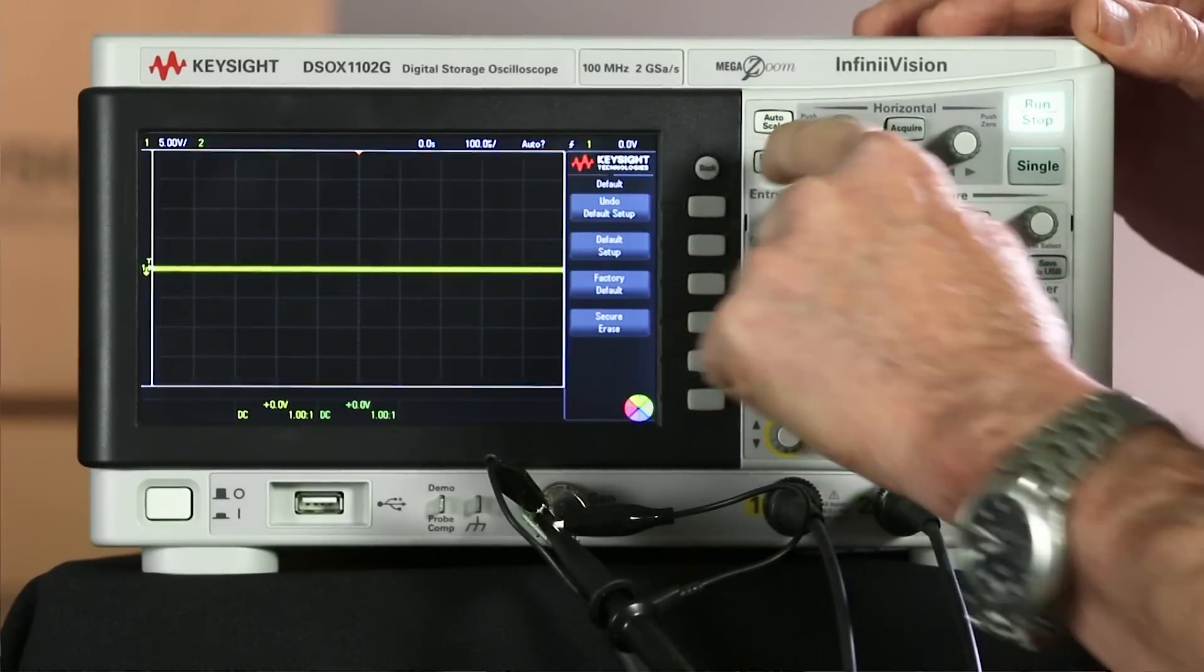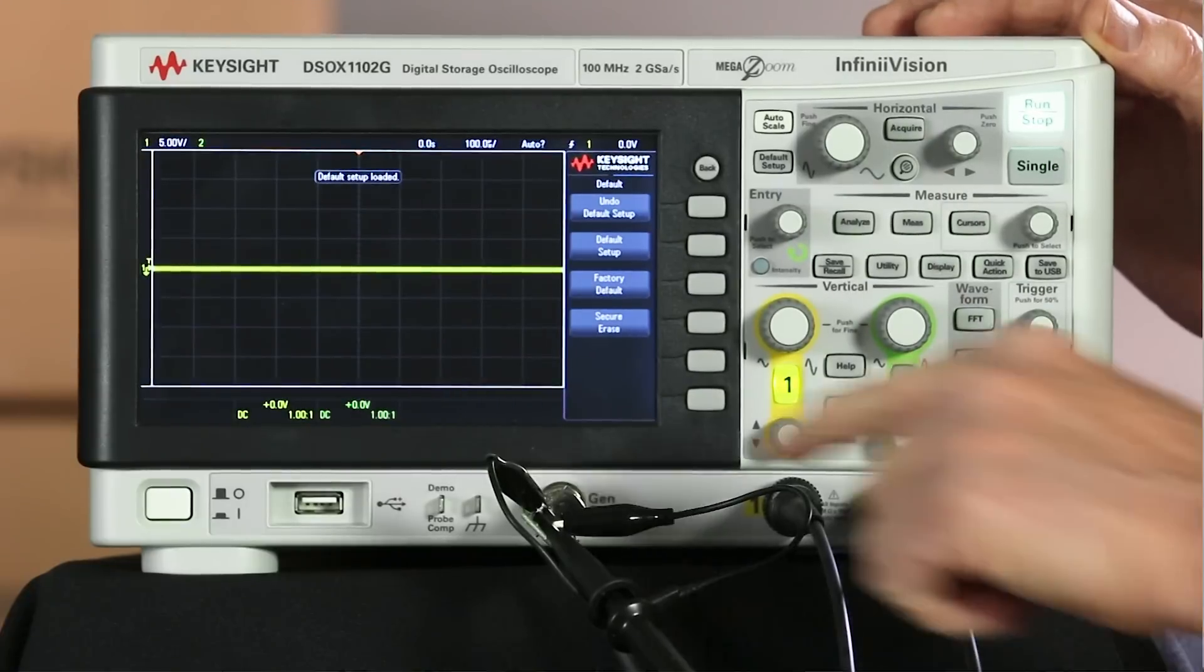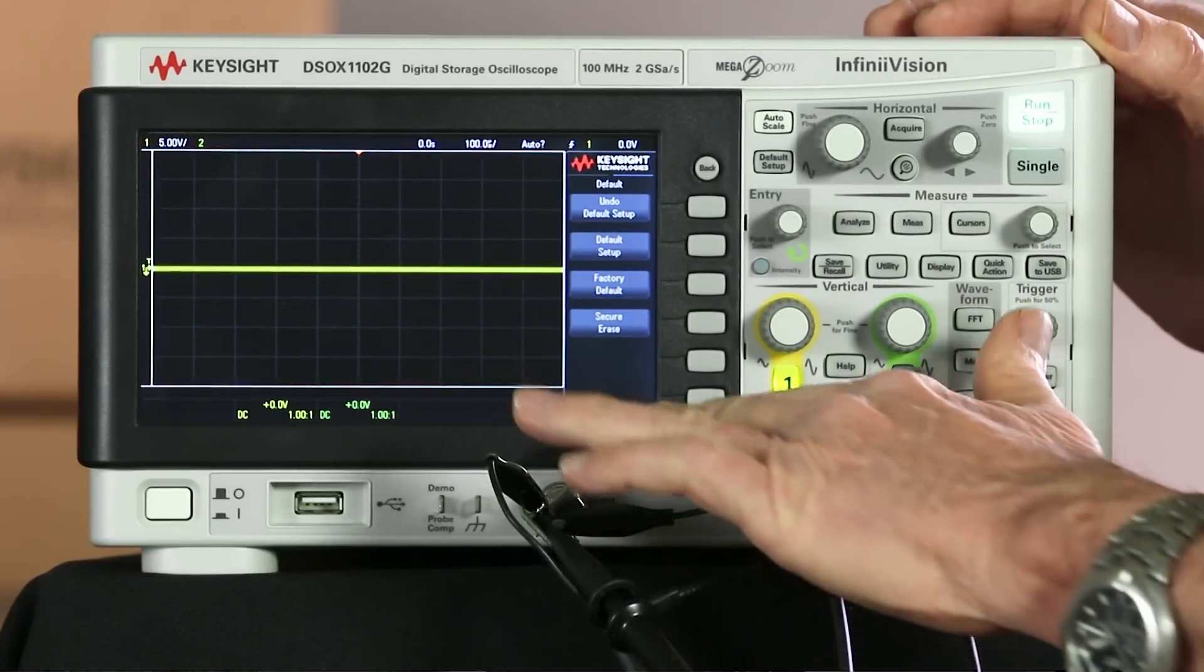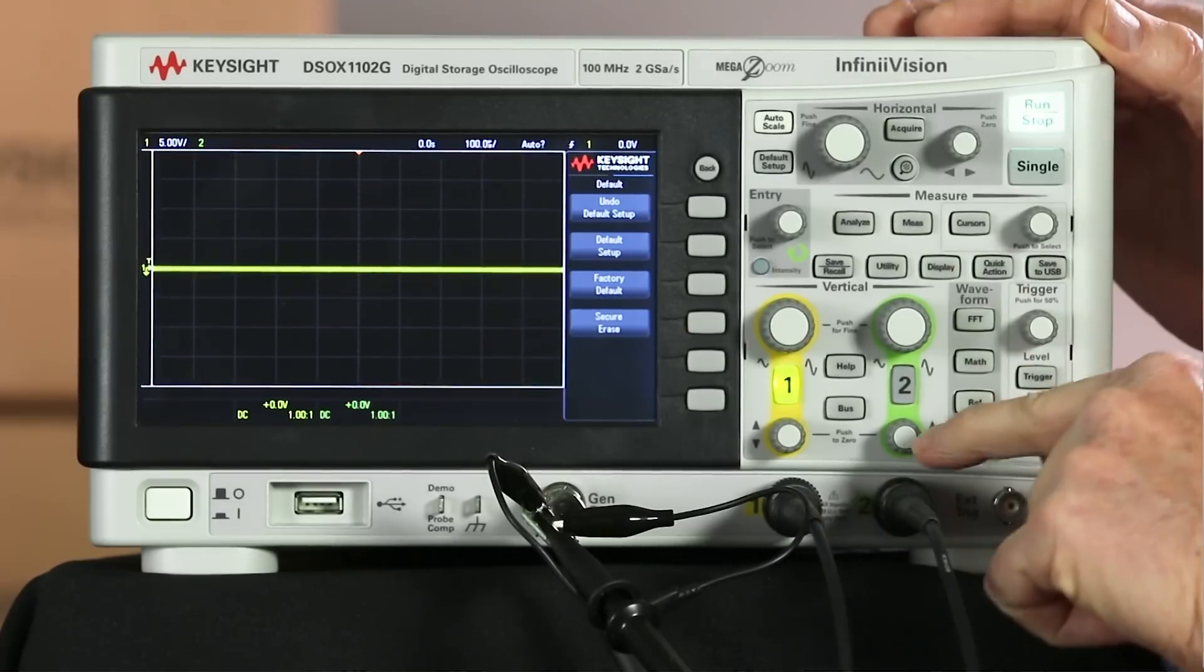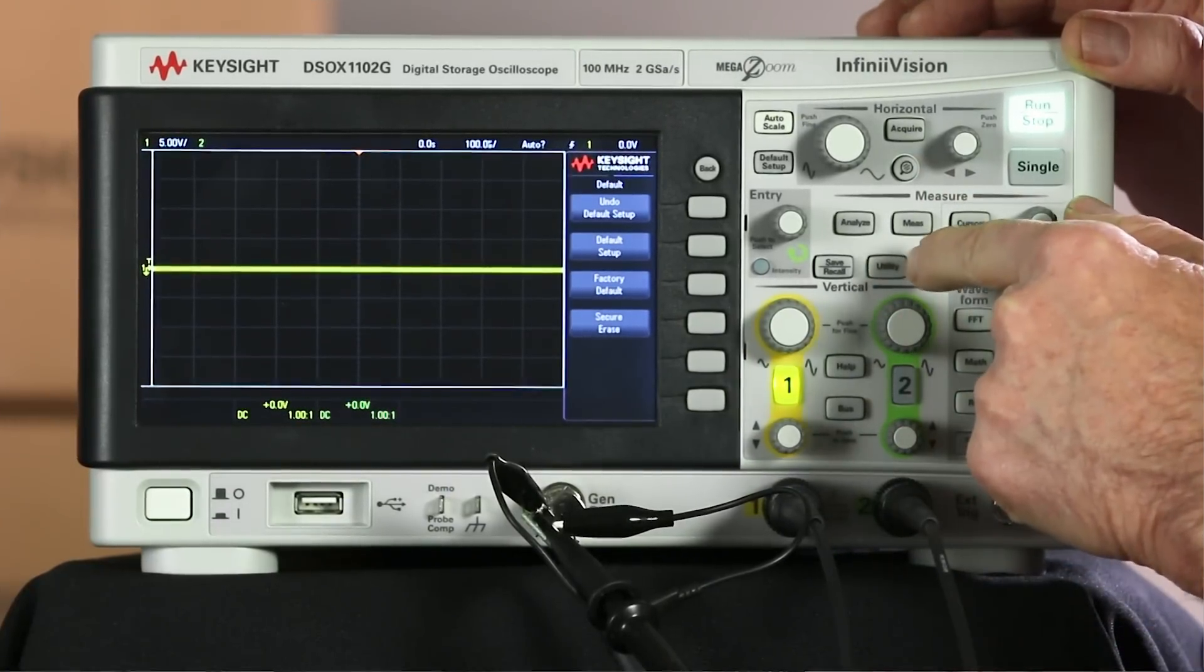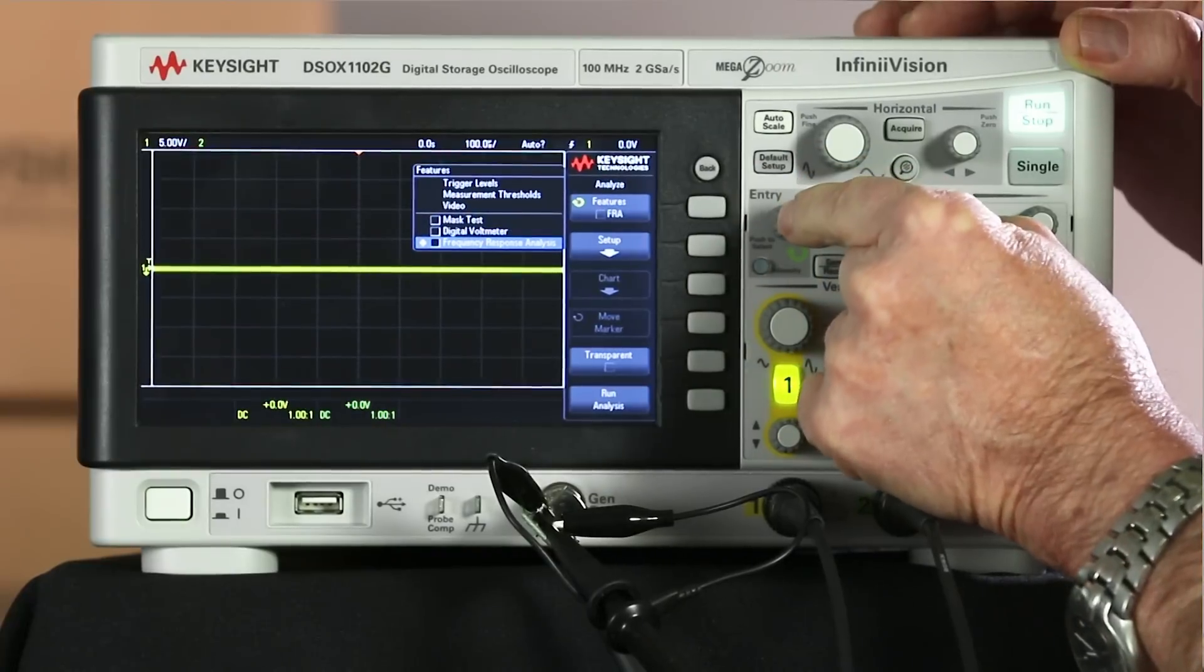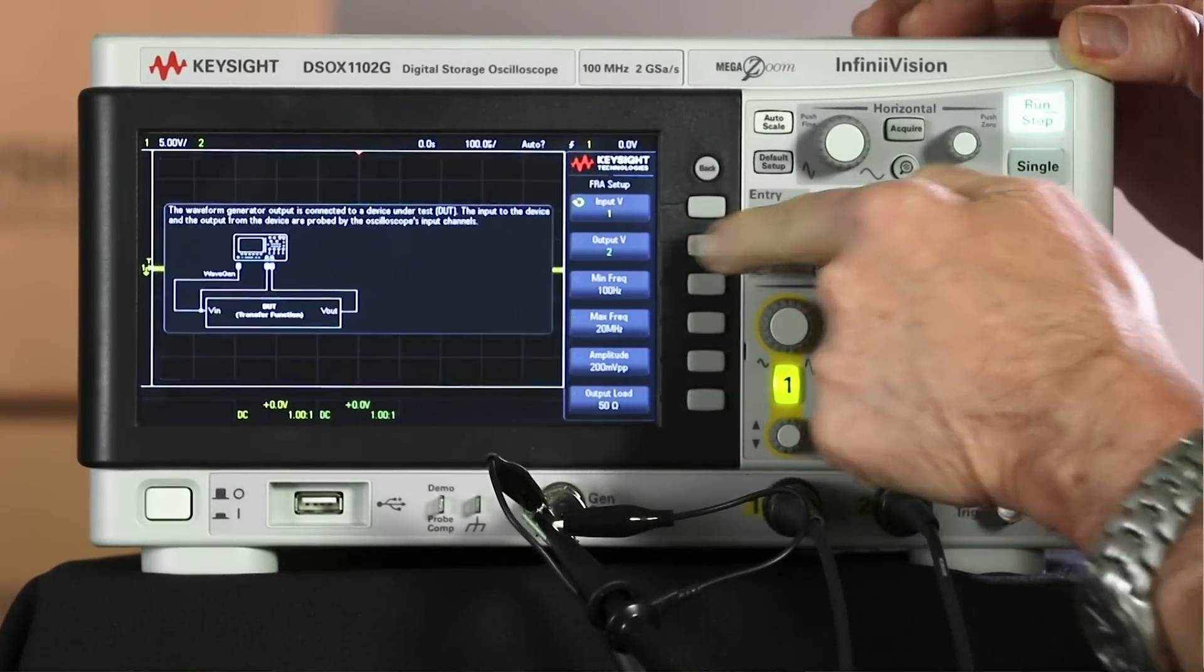So I'm going to start with the default setup. And I already have my low pass filters, just a simple RLC circuit connected to the output of the wave gen, channel one connected to the input, channel two connected to the output, which is in this case a bandpass filter. First, I'm going to select the analyze menu, then select the frequency response analysis.